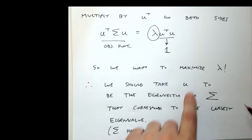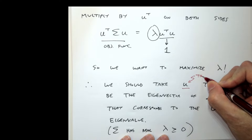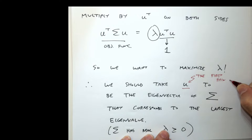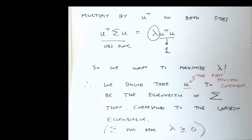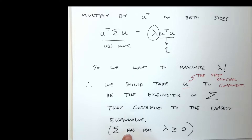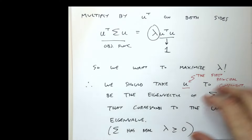This special u is called the first principal component. If given only one vector to project onto, it should be the first principal component — obtained by forming the covariance matrix from the data, using a linear algebra package to find the eigenvalues and eigenvectors, and taking the one corresponding to the biggest lambda. As a bonus, that largest lambda tells us how much variance there is in that direction. If we want to reduce dimensionality from d down to m dimensions, we take the m largest eigenvalues and their corresponding eigenvectors as our m principal components.